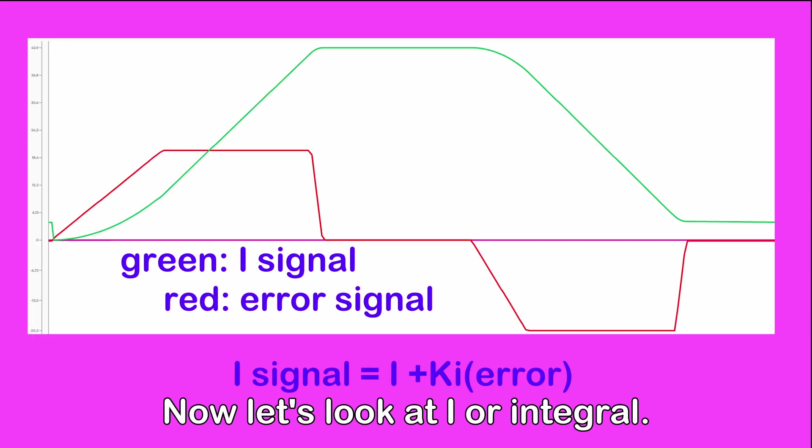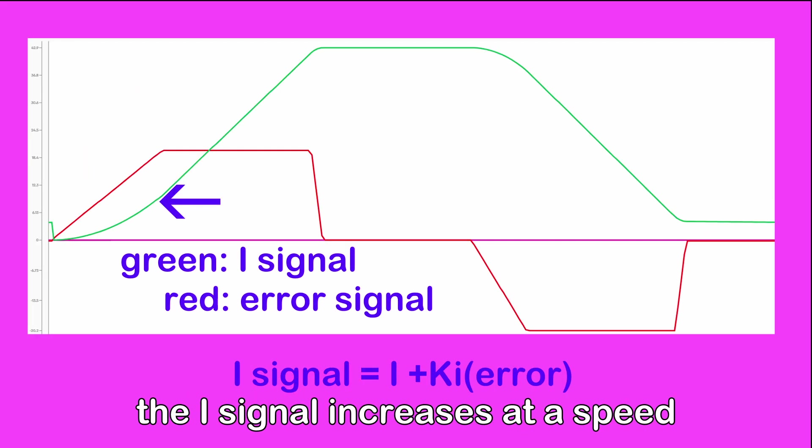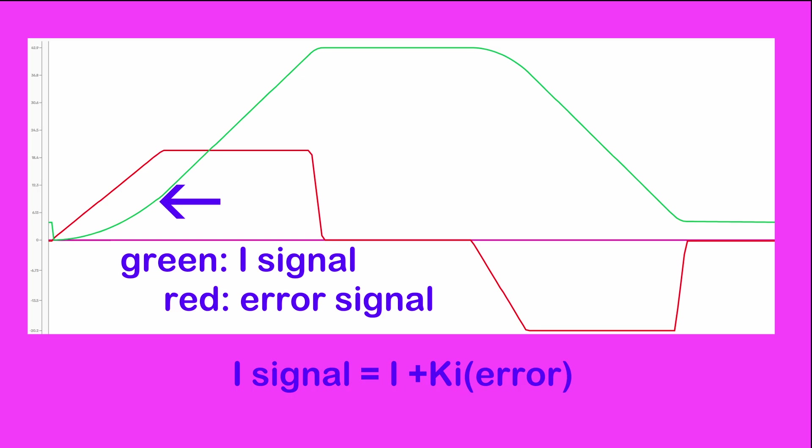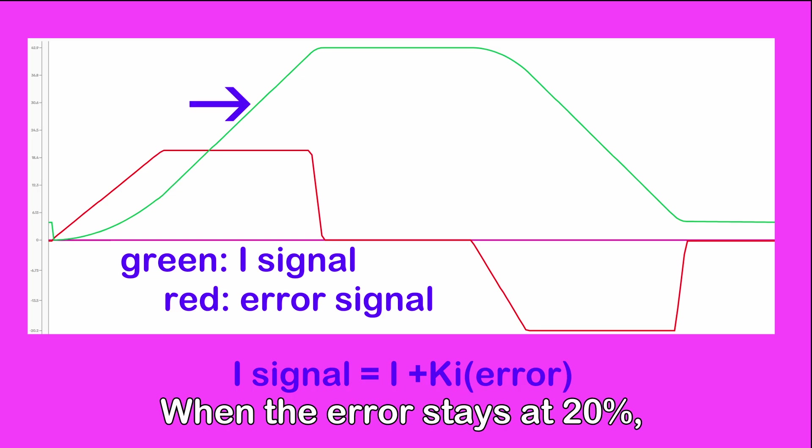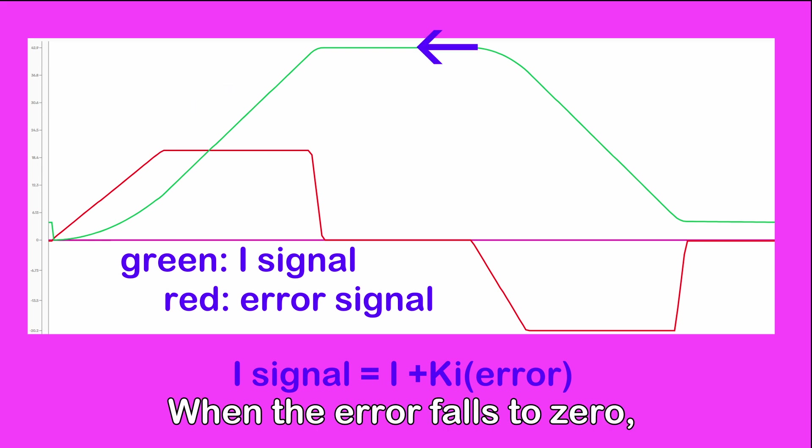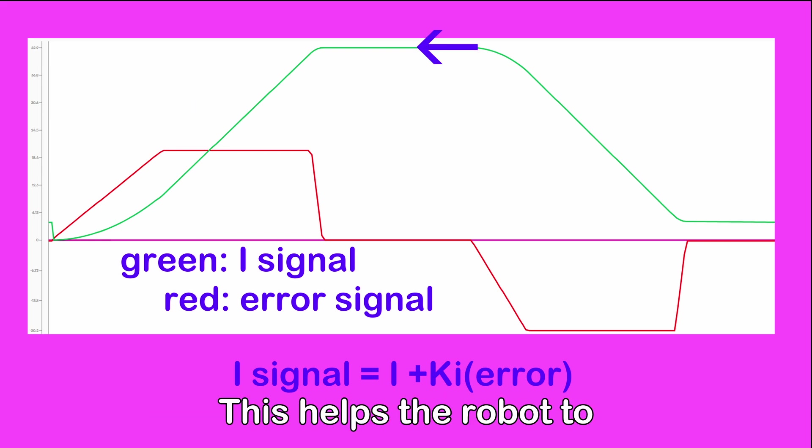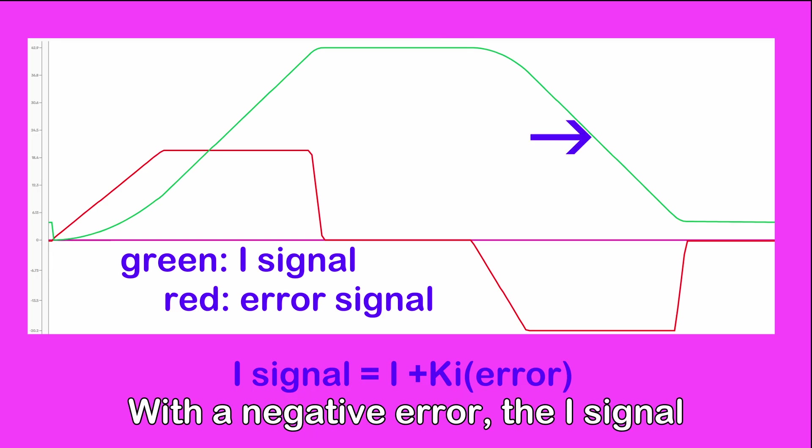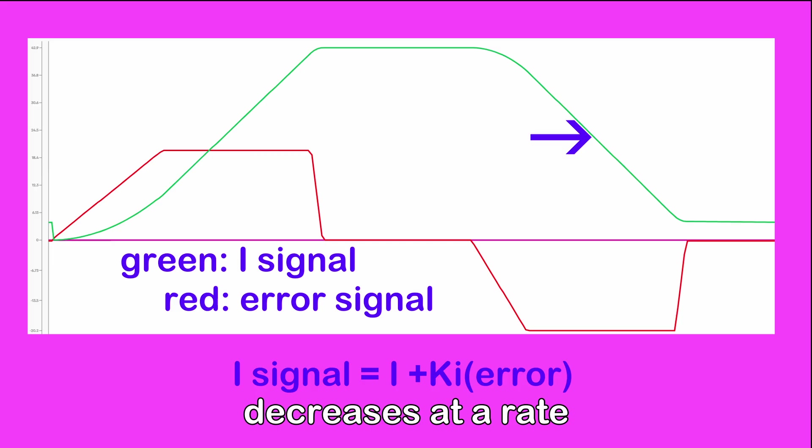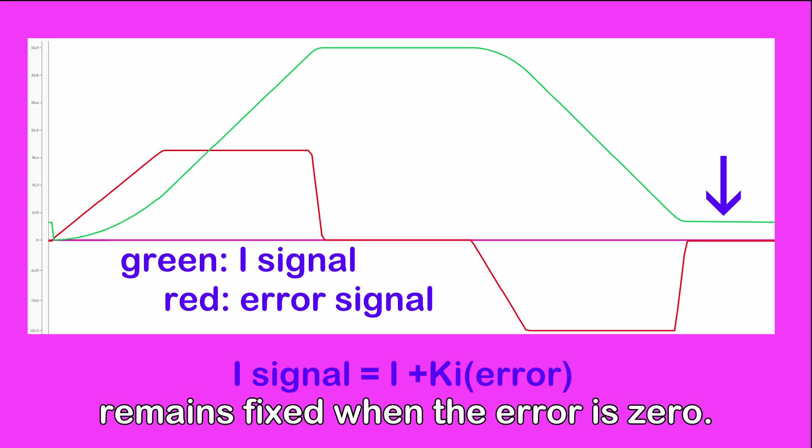Now let's look at I or integral. When the error ramps up, the I signal increases at a speed proportional to the error. When the error stays at 20%, the I signal ramps at a fixed rate. When the error falls to 0, the I signal stays where it was. This helps the robot to stay on the middle of the line driving around a circle. With a negative error, the I signal decreases at a rate proportional to the error and then remains fixed when the error is 0.